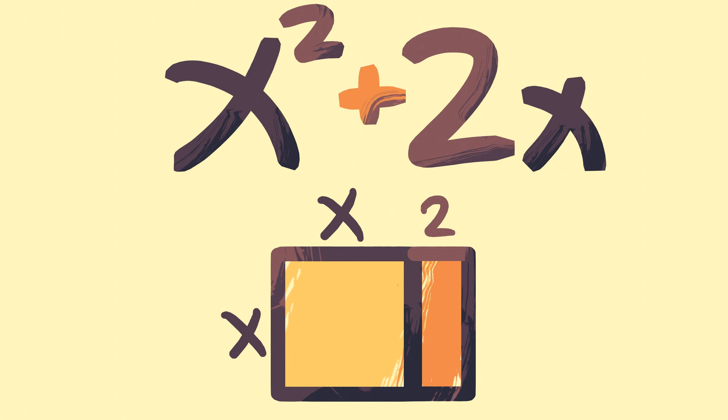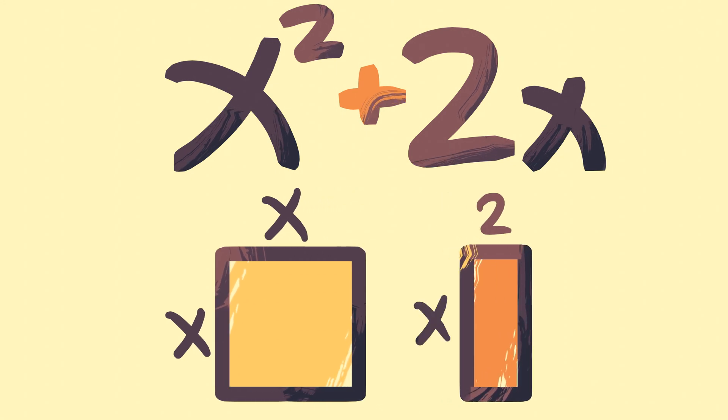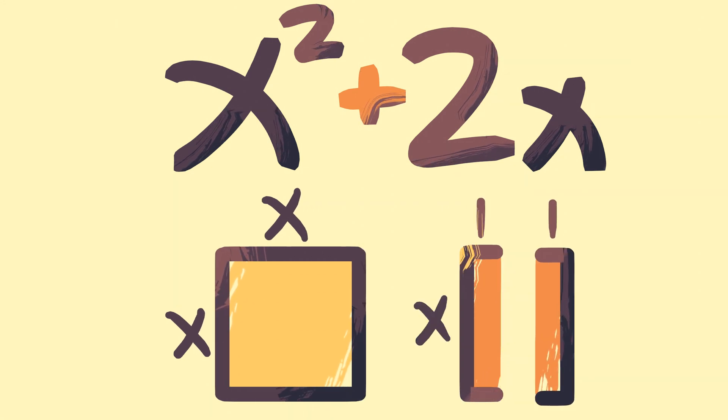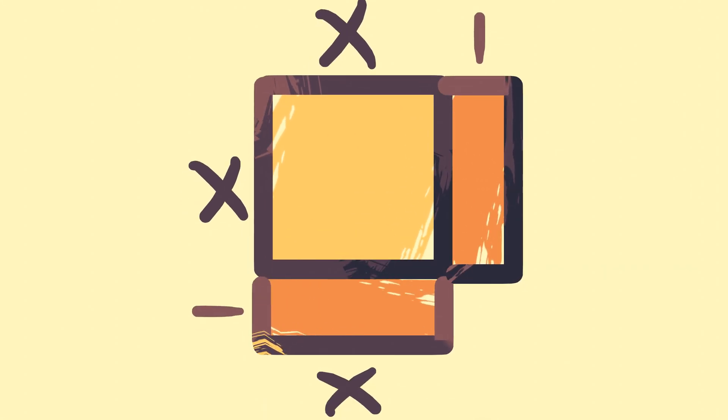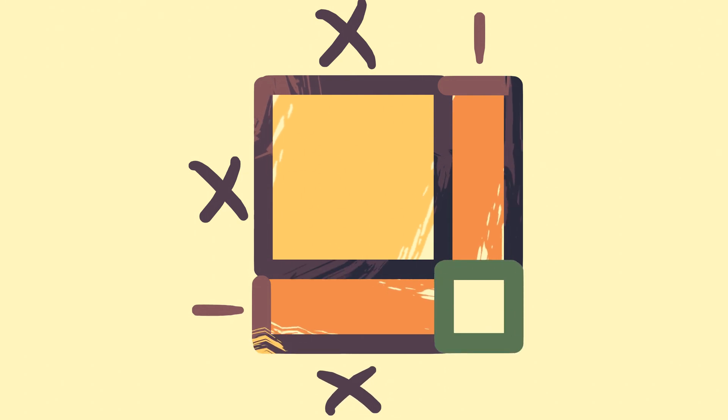What if we tried to form a square instead? If we cut 2x in half, we can then combine the shapes along the x's, forming an almost square. The only thing we're missing is another square. It's pretty easy to see that the length of the missing square is 1.